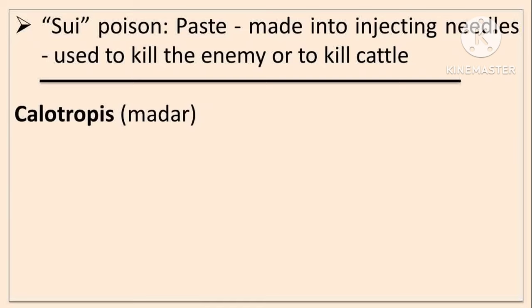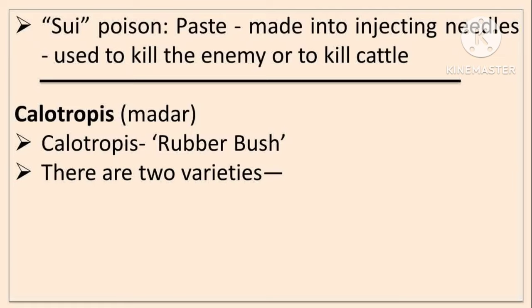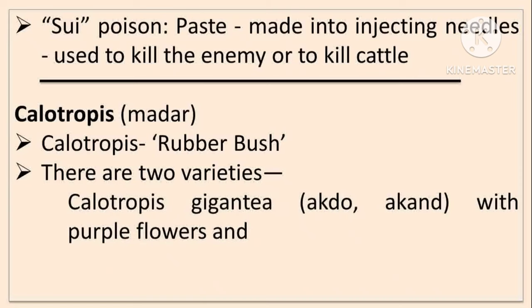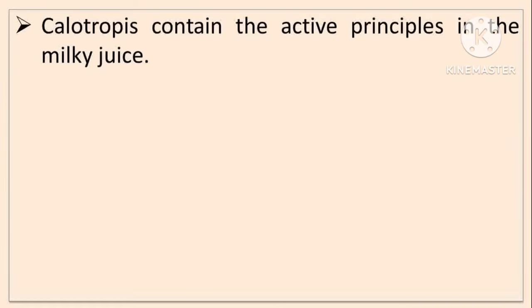Next is Calotropis, that is Madar. It is also called as Rubber breast. There are two varieties: Swetark and Raktark — that is Calotropis gigantea with purple flowers, and Calotropis procera with white flowers. The active principles are contained in the milky juice, which is poisonous.